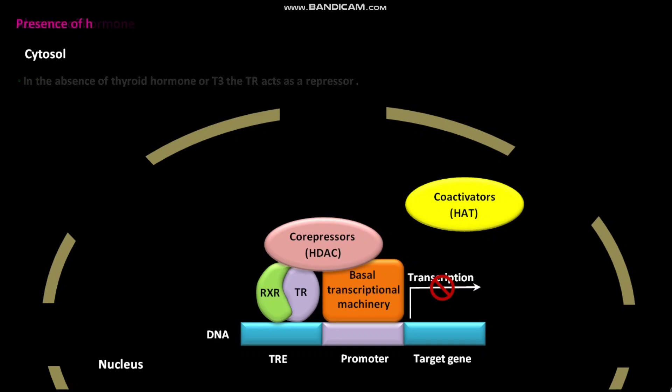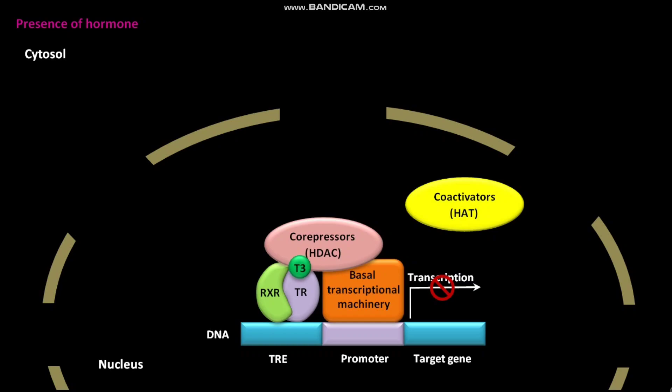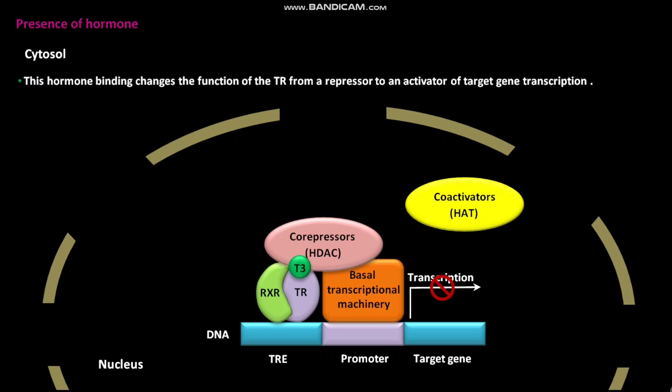In the presence of thyroid hormone or T3, the TR bound to TRE binds to T3. This hormone binding changes the function of the TR from a repressor to an activator of target gene transcription. T3 binding also induces a conformational change in the TR.